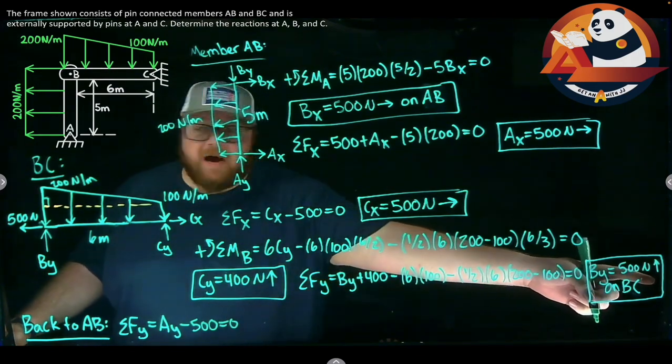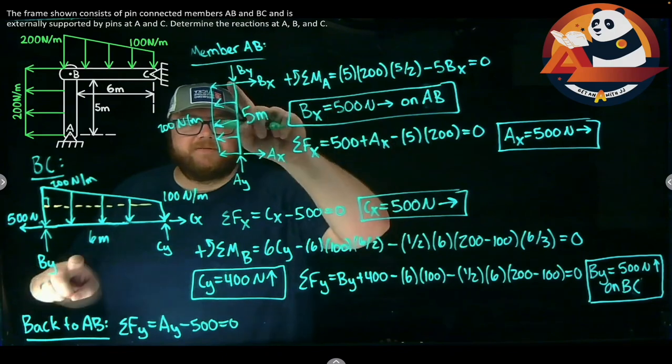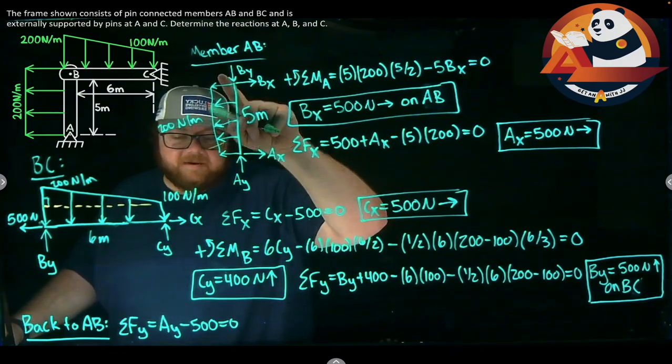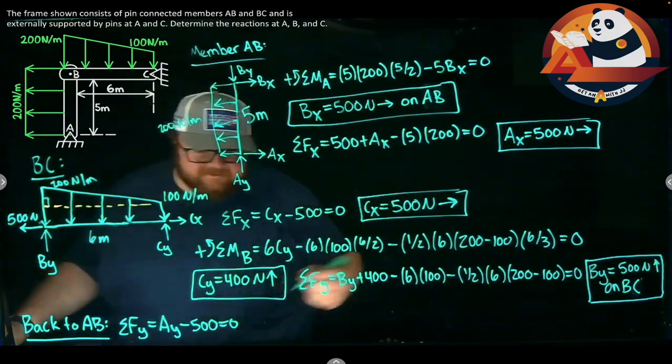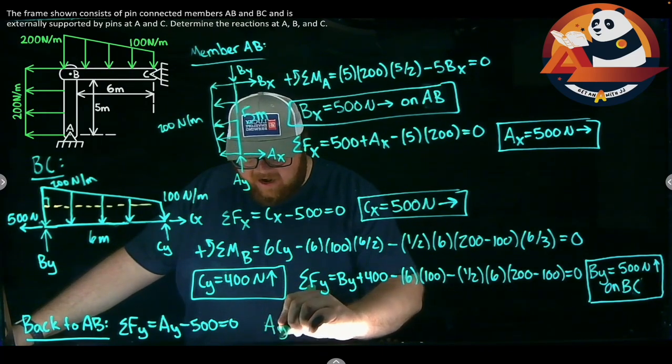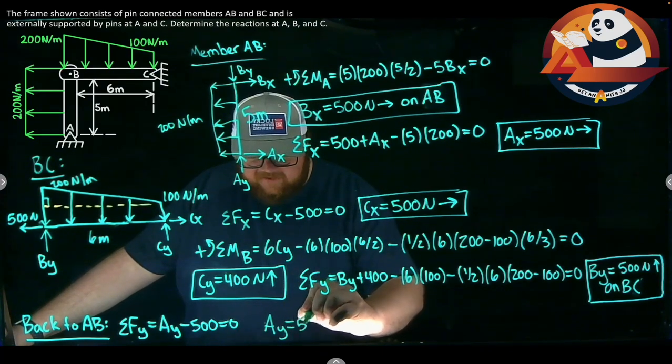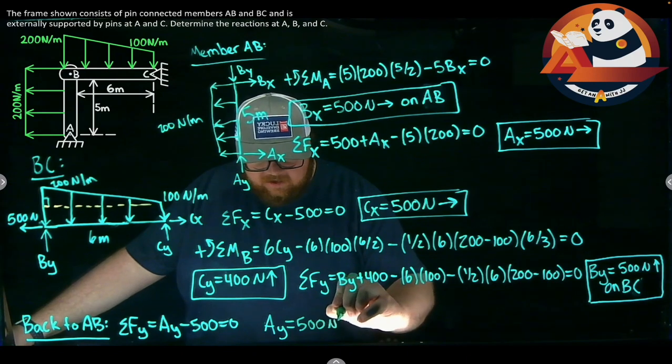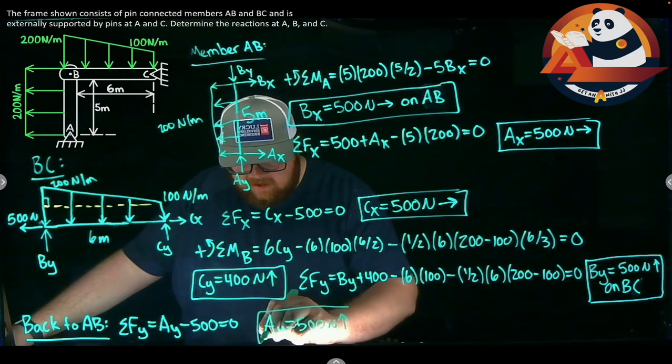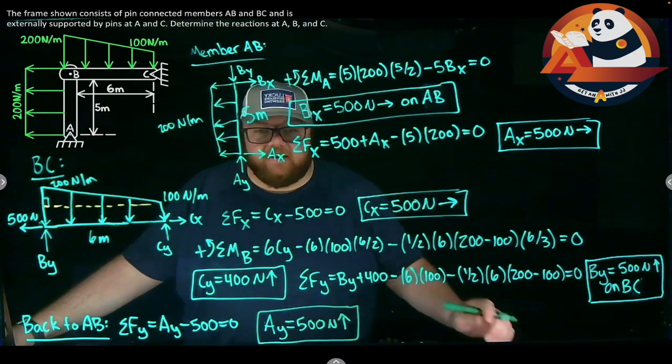We know it was 500 going up on BC. Equal and opposite means it is going down on AB. Which is why we're subtracting it. But summing for AY, I'm going to get that AY is 500 Newtons going straight up. Which would be our final answer for the problem.